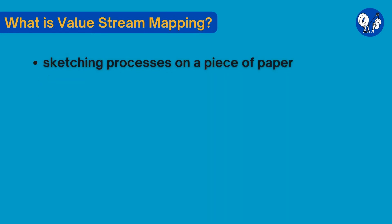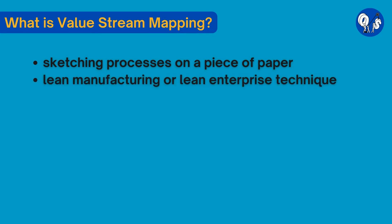What is value stream mapping? In simple layman terms, value stream mapping is simply sketching processes on a piece of paper like a simple drawing with chunks of information in a flowchart format. Value stream mapping is a lean manufacturing or lean enterprise technique used to document, analyze, and improve the flow of material or information required to produce a product or service for a customer.